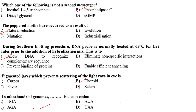The pigmented layer which prevents scattering of light rays in the eye is the choroid. Answer is option B. In mitochondrial genomes, AGA is a stop codon. Answer is option C.